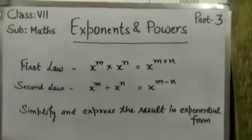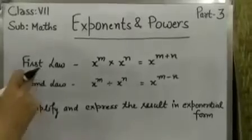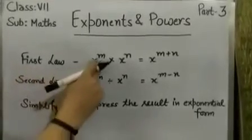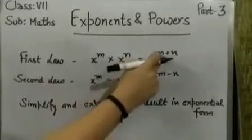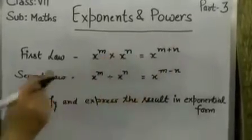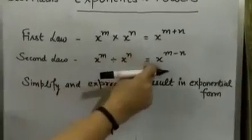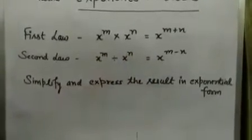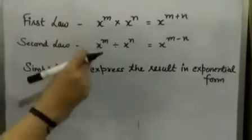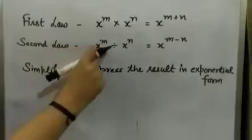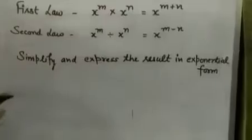Hello students. In our previous e-lectures we discussed about the two laws of exponents. First law: x raised to power m multiplied by x raised to power n is equal to x raised to power m plus n. Second law: x raised to power m divided by x raised to power n is equal to x raised to power m minus n. In these two laws, we have to keep in mind that the bases should be same. Now we are going to simplify the results based on these two laws.